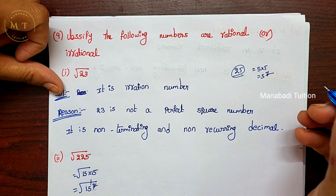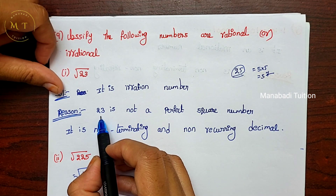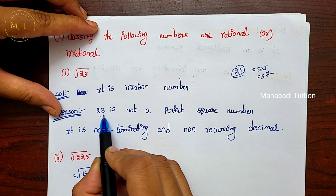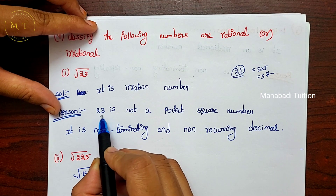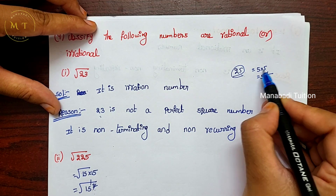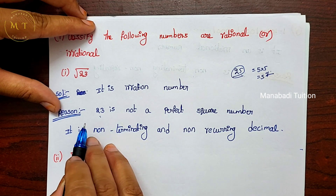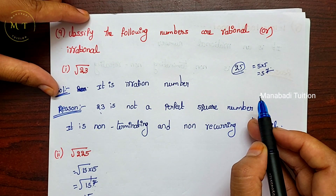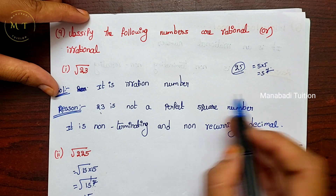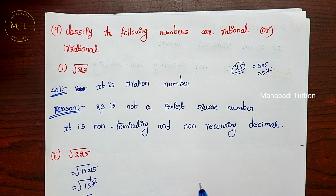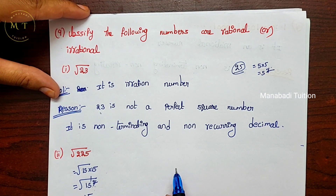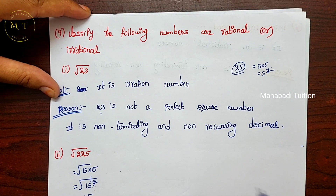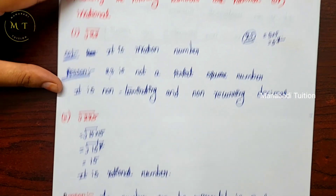Question 9 — first number: √23. 23 is not a perfect square number, meaning we cannot find two same numbers whose product is 23. Therefore √23 is automatically an irrational number, and its decimal representation is non-terminating and non-recurring.